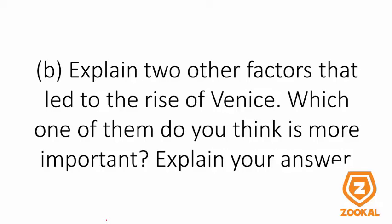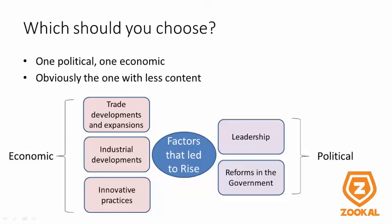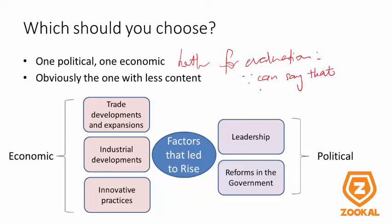Let's take a look at part B. The topic will still be on the rise of Venice — this will be the case for every single essay. They will ask you to explain two other factors. My suggestion is to choose one political and one economic, as it's better when you do the evaluation because you can say that you need a multi-pronged approach.